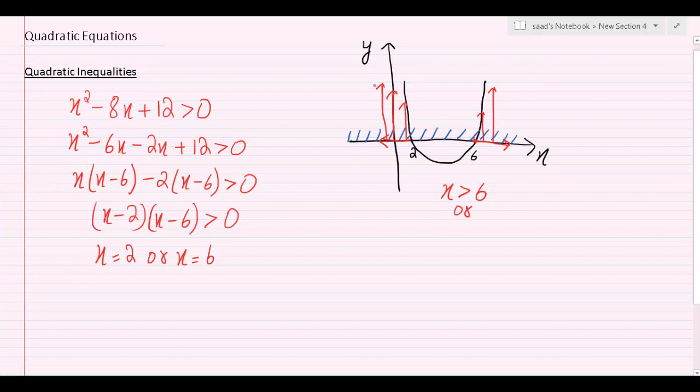Or the other solution would be since we are moving towards the left of 2 meaning that our x values are decreasing meaning that our x values will now be lesser than 2. So the other solution would be that x is less than 2.